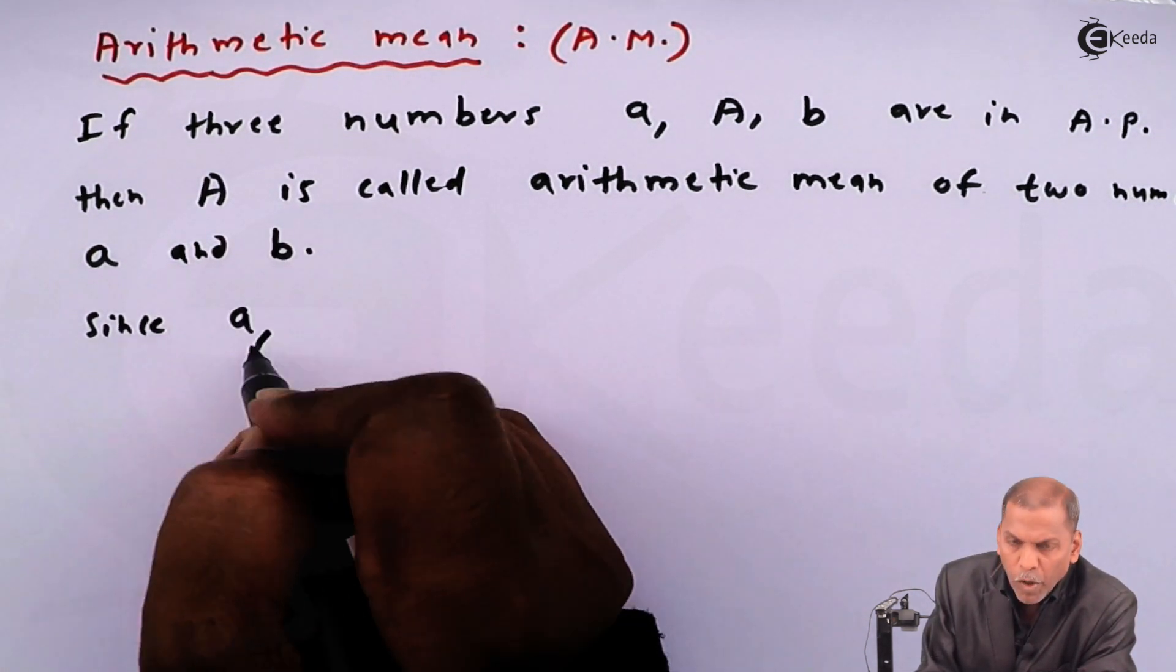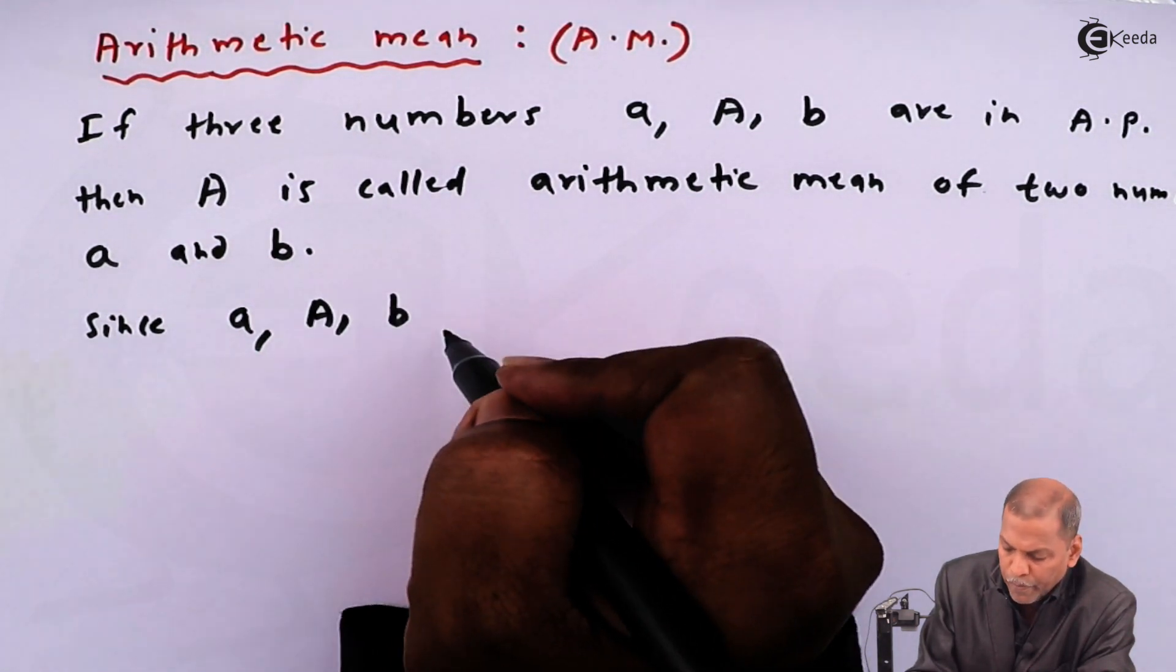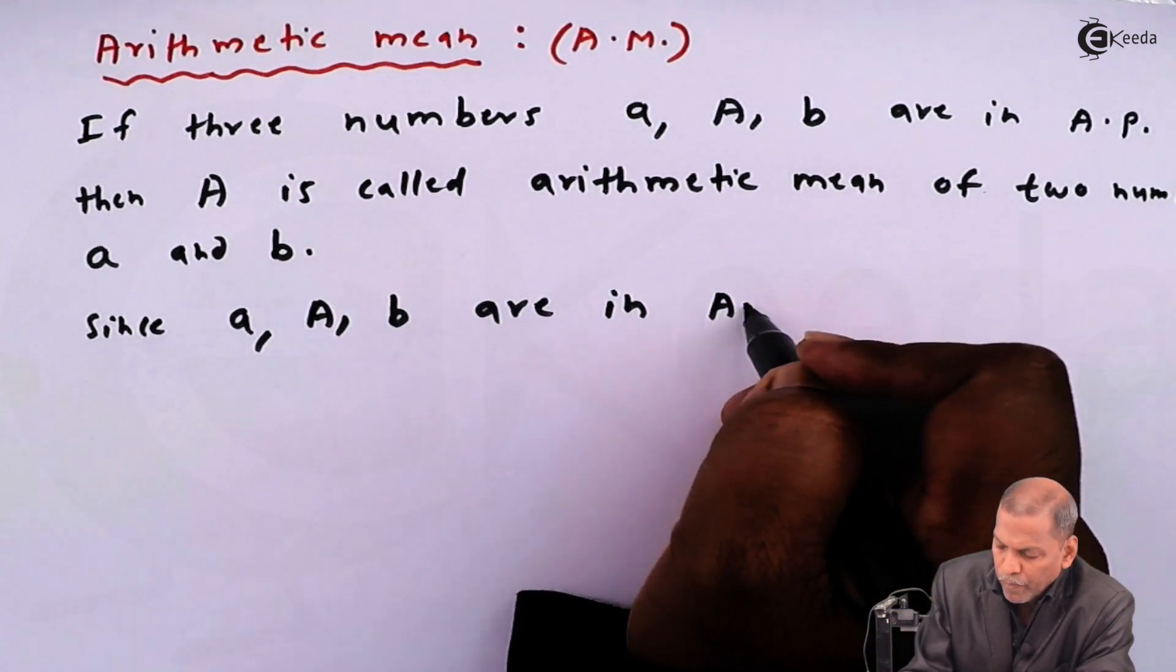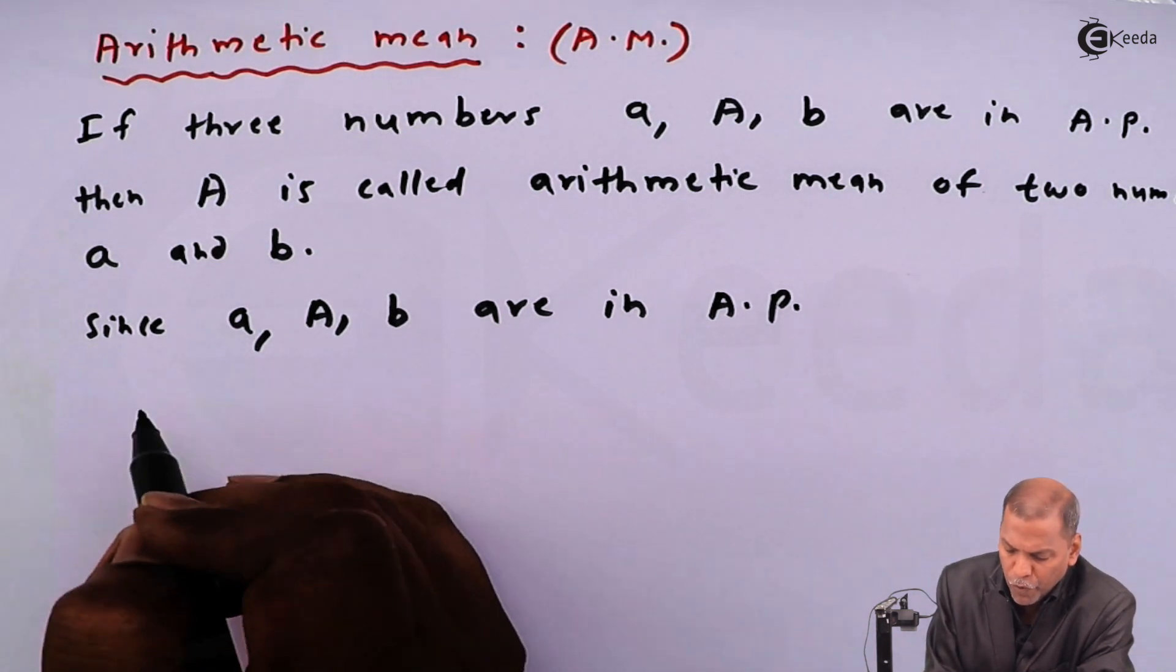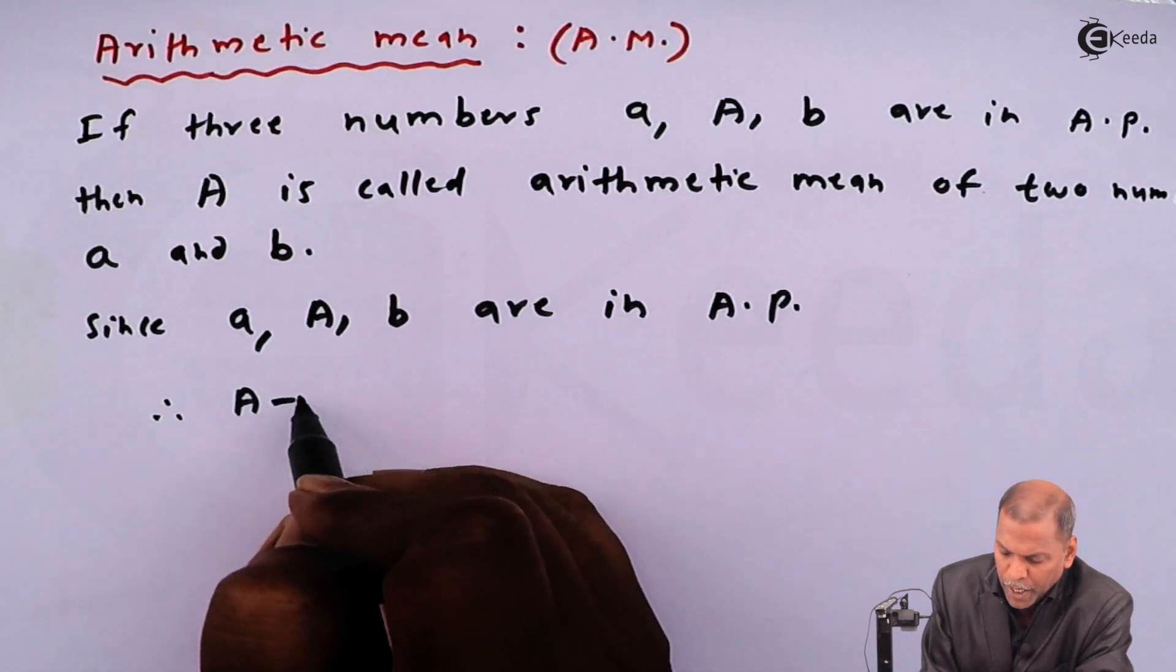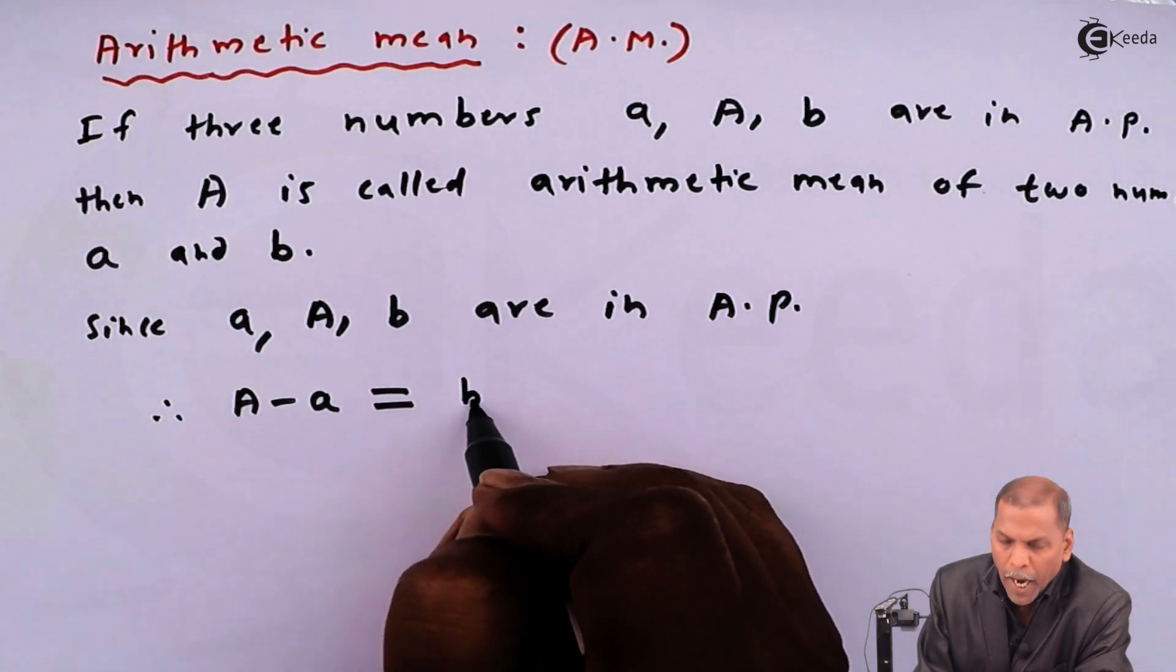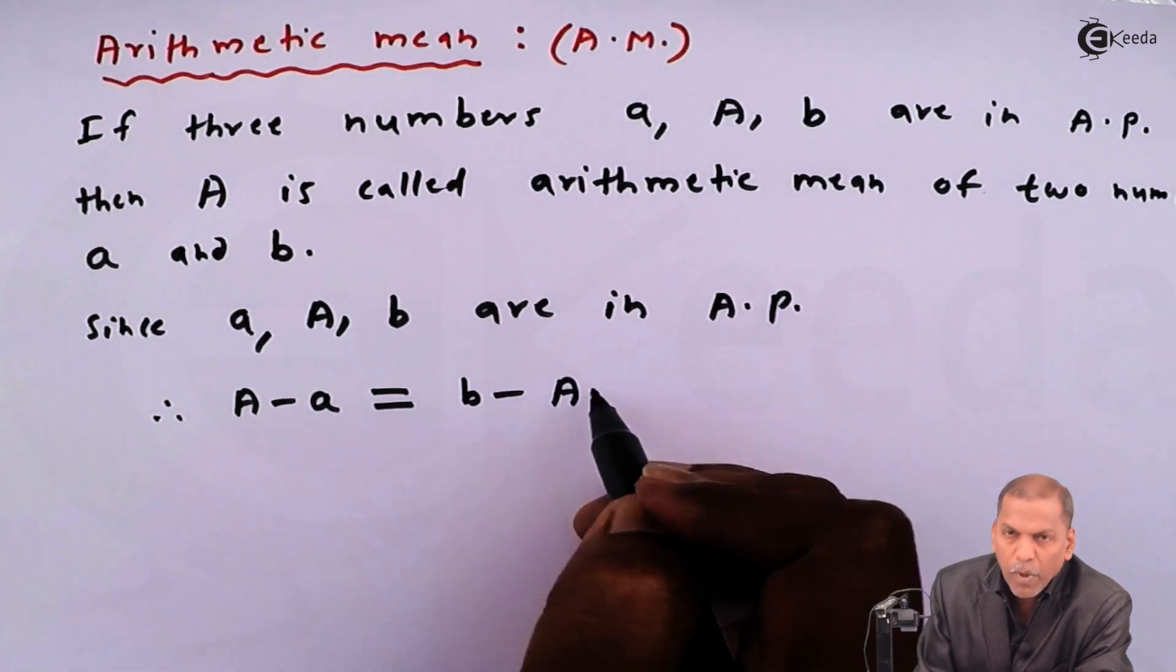Since small a, capital A, and b are in AP, now for AP we have to remember that the common difference is constant. And therefore, here we have capital A minus small a must be equal to b minus capital A.